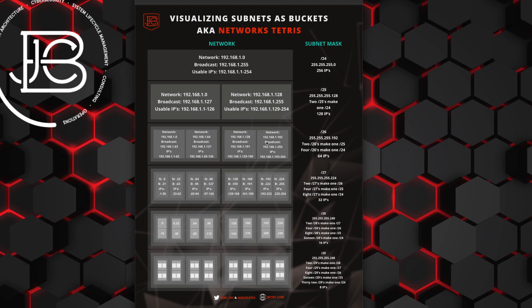The address assignments or boundaries of these subnets are always the same and they can't change. For instance, looking at slash 26s, two slash 26s fall into the same space as the slash 25 above it. You can't take two slash 26s that bridge two different slash 25 networks and combine them to equal one slash 25. Learning where these boundaries are is really the foundational and critical thing to understanding subnetting.